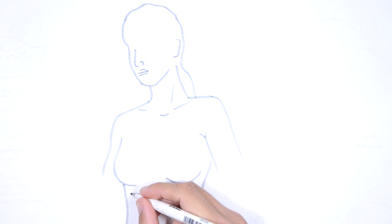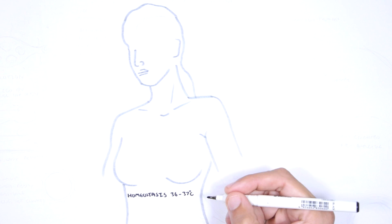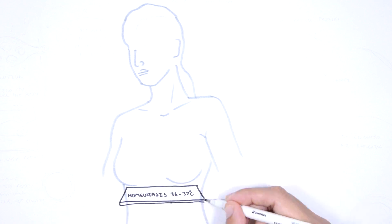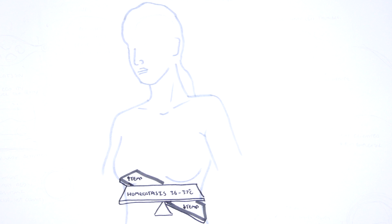A good example of this is the internal body temperature, which is usually maintained between 36 degrees and 37 degrees. Again, the main mechanism to maintain a homeostatic environment is through negative feedback. So, let's look at how the body maintains normal body temperatures using negative feedback.